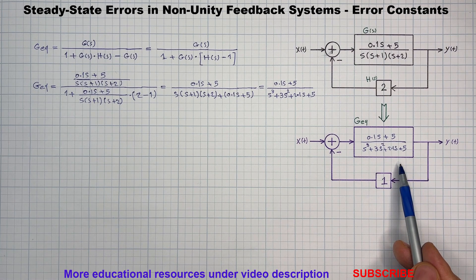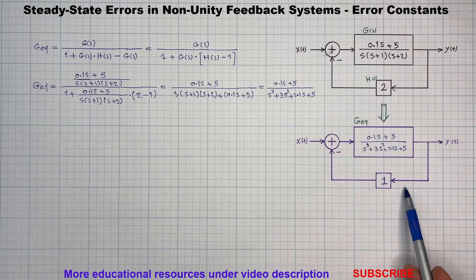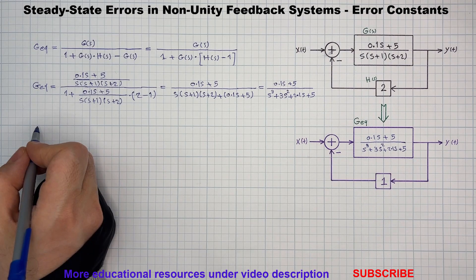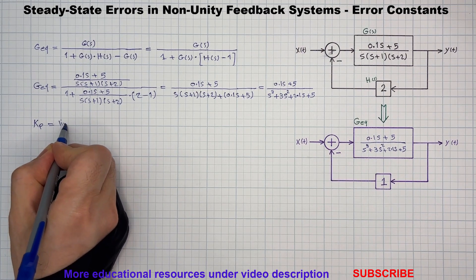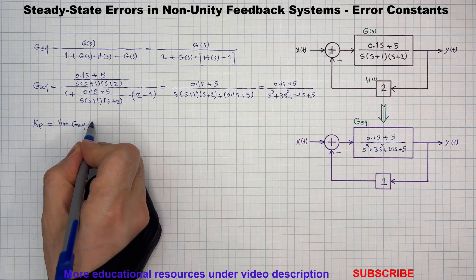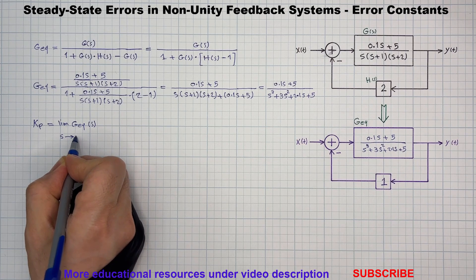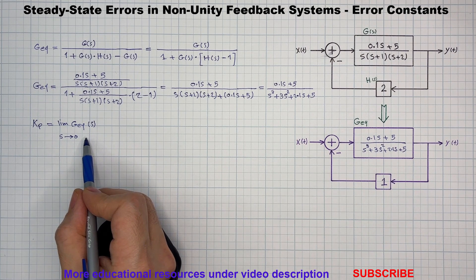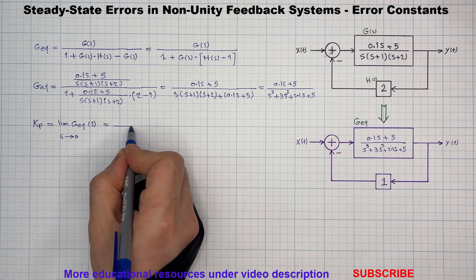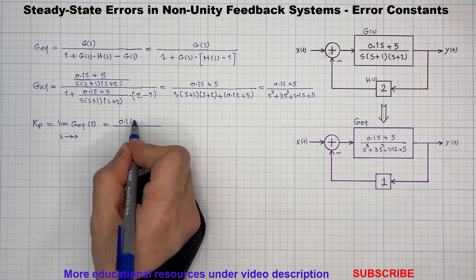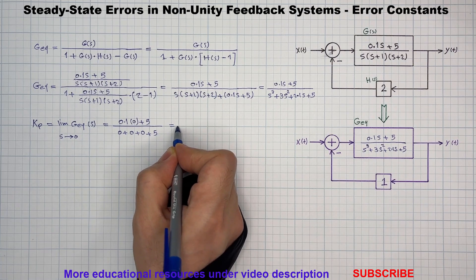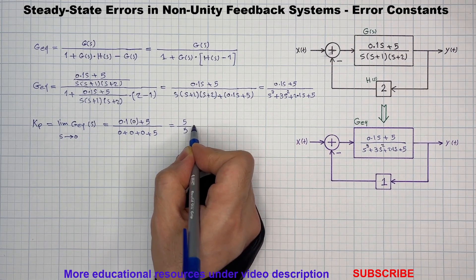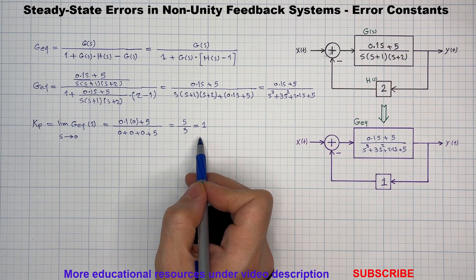This is the system we will now use to compute our error constants. As you can see here, we have a unity feedback path. First up, the position error constant Kp. This is used for a step input — let's substitute in and evaluate. We will use Kp to determine the steady-state error for a unit step input.